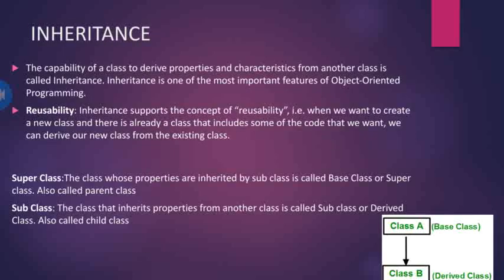Now what is inheritance? Inheritance is one of the main and very important properties of C++. Inheritance is the capability of a class to derive properties and characteristics from another class. Inheritance is one of the most important features of object oriented programming language.